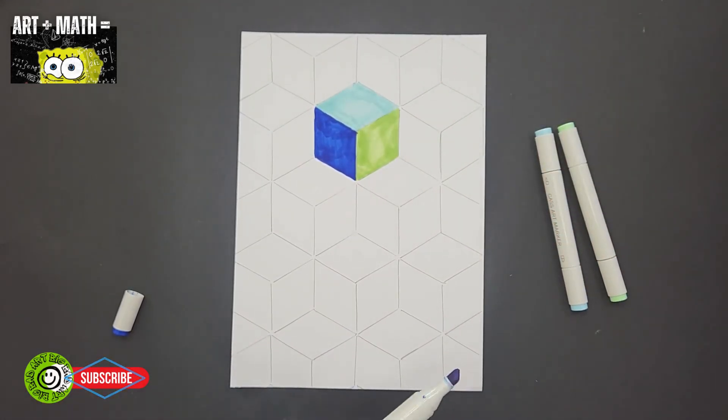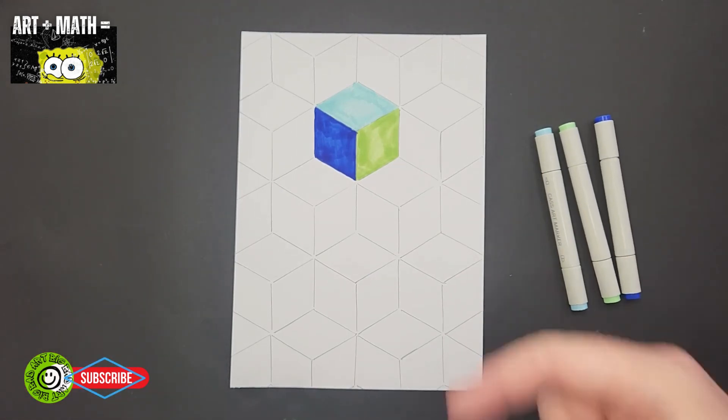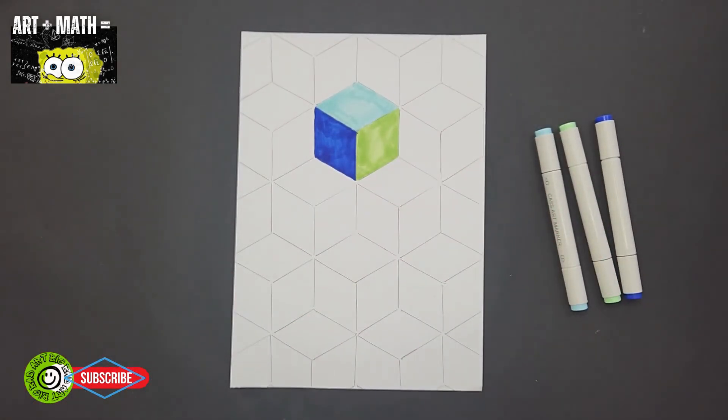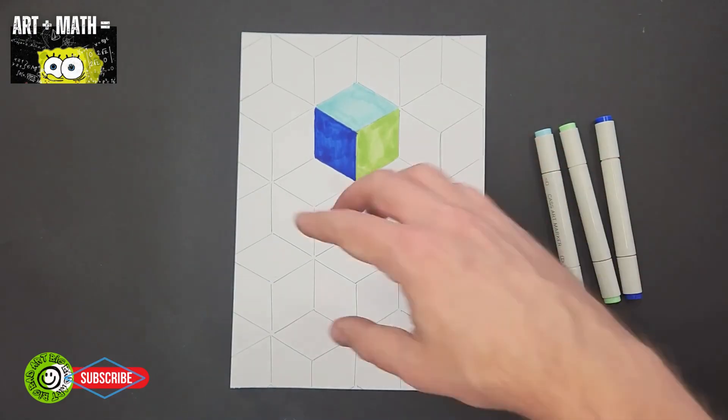Okay, so there's one. As you can see with the colors, light to dark, it has like a 3D cube effect. Okay, so now I'm going to color in all the other rhombuses using the same pattern.